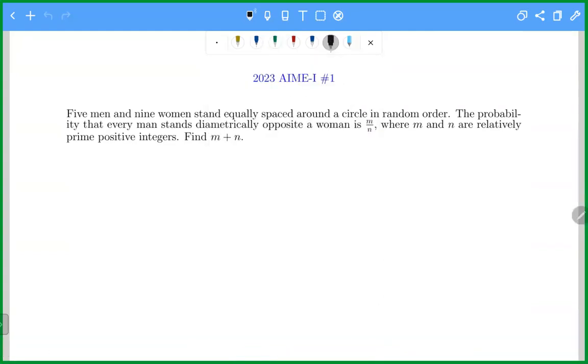So there are five men and nine women standing equally spaced around the circle. I would like to draw a circle.